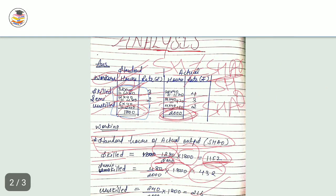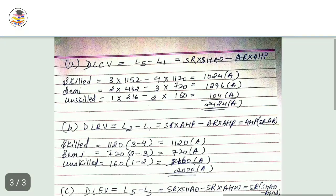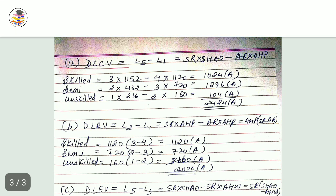Then direct labor rate variance: L2 minus L1. SR into AH, so AH is common. Then SR minus AR. Put the values and calculate.